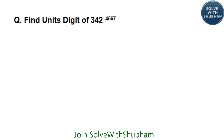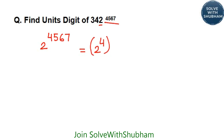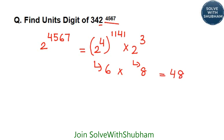Find the units digit of 342 to the power 4567. When finding the units digit, only the unit digit of the base and the power matter. So this question is the same as finding the units digit of 2 to the power 4567. Cyclicity of 2 is 4. Dividing 4567 by 4 gives 1141 remainder 3, so we write it as 2 to the power (4×1141) into 2 to the power 3. This ends with 6 times 8, giving units digit 8.